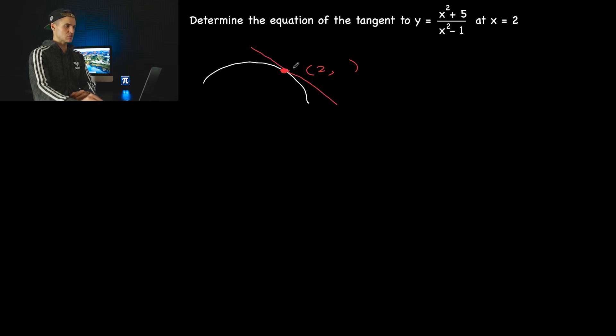Now, when we find the equation of this tangent, we need two things. We need the full coordinate. We also need the slope of the tangent.